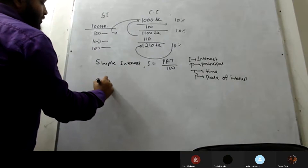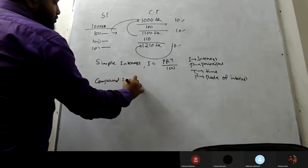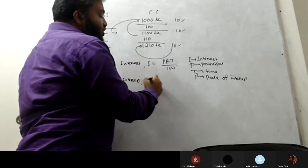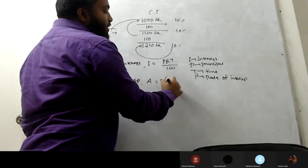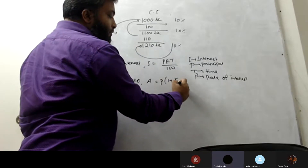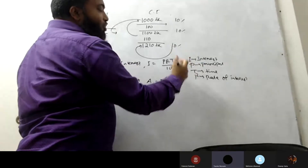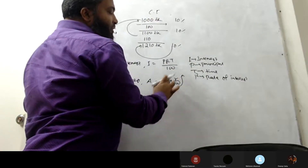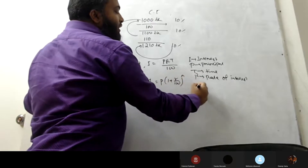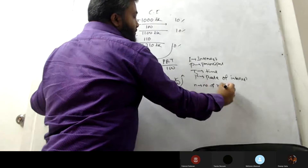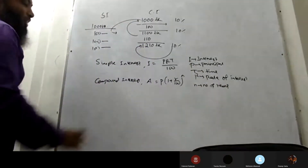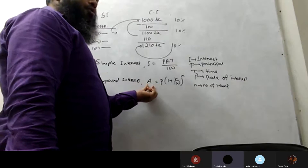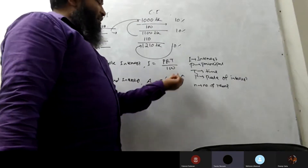For compound interest, the formula for the total amount is: A equals P times the bracket 1 plus R divided by 100, raised to the power N. Where P is the principal — the original amount — R is the rate of interest, and N is the number of years.